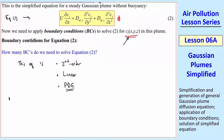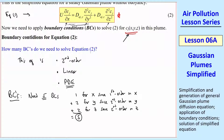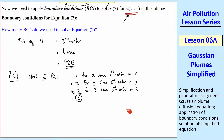So how many boundary conditions do we need? You need one boundary condition for every order of every variable. We need one for x because it's first order in x, two for y because it's second order in y, and two for z since it's second order in z. The answer is five — we need five boundary conditions to solve this problem. Now we need to actually find what these boundary conditions are.